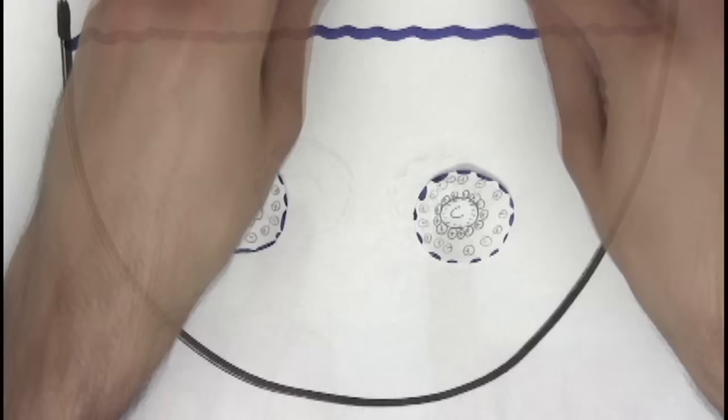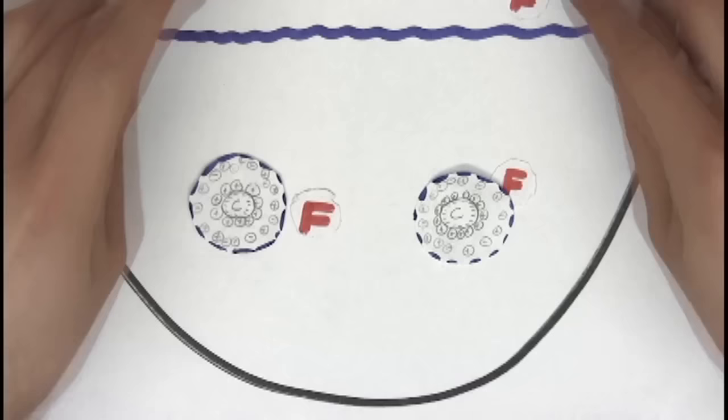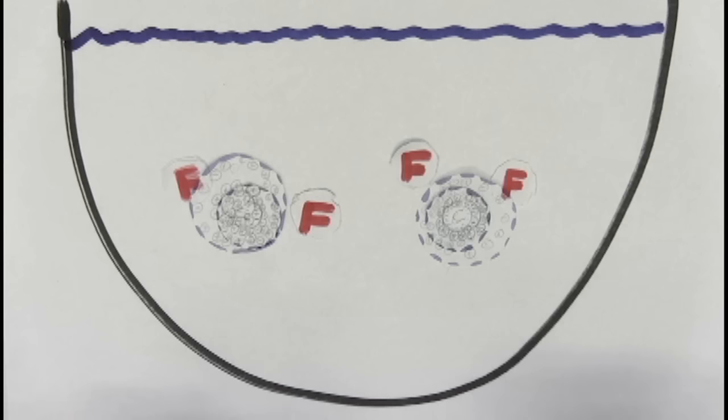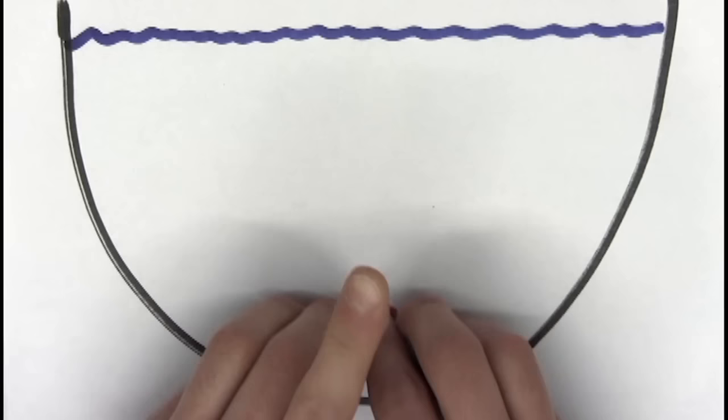Once the flocculant is added, it adheres to the surfaces of the particles, compressing the double layer and allowing the colloids to stick to each other and form flocs. These flocs are now heavy enough to settle to the bottom by gravity.